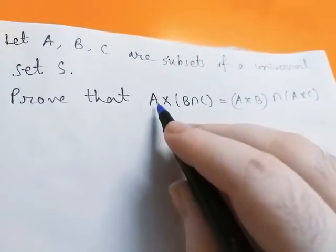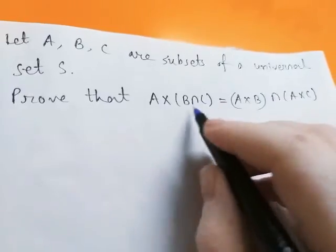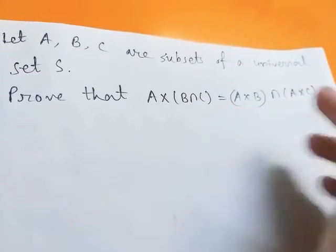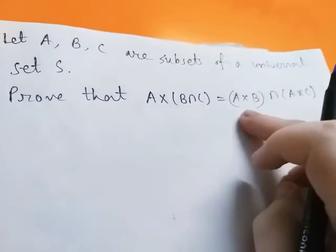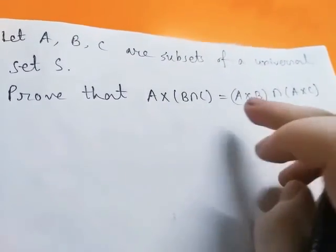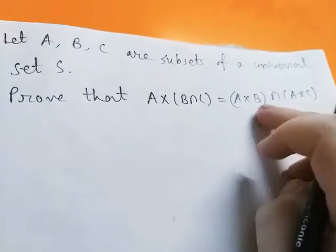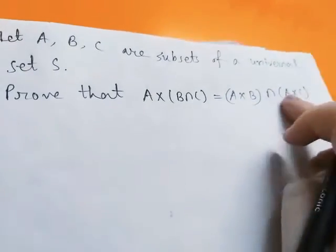That is, the Cartesian product of two sets A and (B intersection C) equals the intersection of Cartesian products of A, B and A, C.